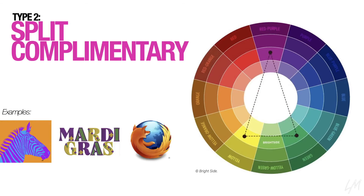And lastly, we have Split Complementary, which again is another one that can be difficult to use well but if done properly can turn out really nice. Firefox is an example of this, where they're using the orange and yellow kind of like the analogous one, but then they're also using blue-purple or even a lighter blue in their logo as well. Typically when you're designing lights, or even when you're looking at motion backgrounds, you'll find that most of them are going to follow one of these four patterns. And when you're designing lights to match those backgrounds, you really should be doing the same thing.